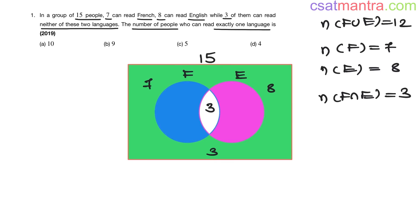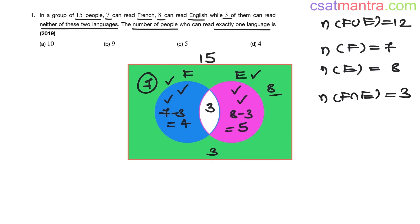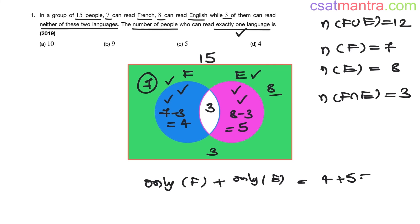Now the people who read French — this total circle is 7. The only-French part will be 7 minus 3, which is 4. The people who read English — this circle is 8. The only-English part will be 8 minus 3, that is 5. So this area is the people who read only French, and this area is the people who read only English. We want the people who can read exactly one language — that is only French plus only English: 4 plus 5 equals 9.